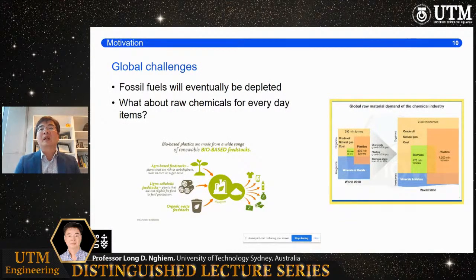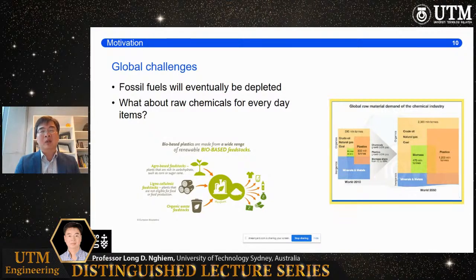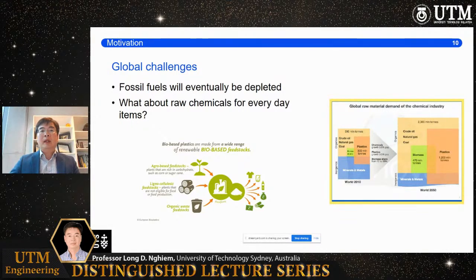We started this work some years ago and the driver is to look at ways for the water industry in Australia to become energy neutral. We also recognize that eventually we will run out of fossil fuel and will need to substitute all raw materials that currently come from fossil fuel with something else — most likely a bioresource. If we can get bioresources such as biomethane, we can then produce plastic and other materials that eventually substitute for fossil fuel.